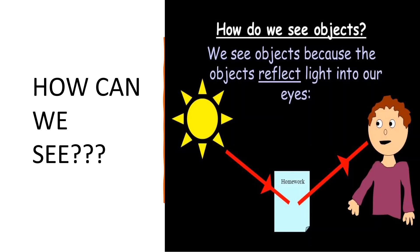A great natural example is the Moon. The Moon does not emit its own light. The light from the Sun hits the Moon, and the Moon reflects that light off its surface onto the Earth and into our eyes — and we can see the Moon. We may feel that the Moon is emitting its own light, but no — it's just reflection.